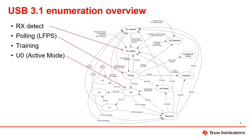The USB 3.1 enumeration process is defined by the USB state machine. We will focus on four key steps to understand how a USB 3.1 host and device establish a connection at 5 gig and 10 gig speeds.